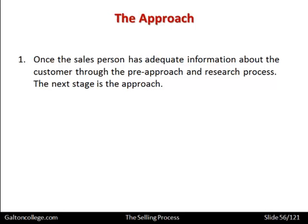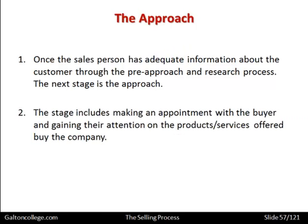Moving on from the pre-approach: once the salesperson has adequate information about customers, the next stage is the approach itself. The stage includes making an appointment with the buyer and gaining their attention on the product or service offered. It could be in a car showroom — having watched customers look at various cars — when the time is right, then make the approach: go and speak to the customer, talk generally about the product they want, what they have in mind, and start the sales process.